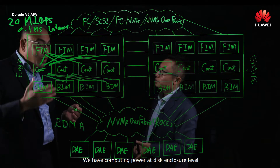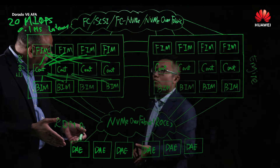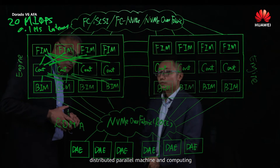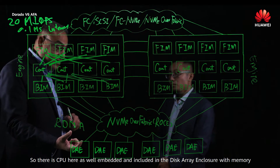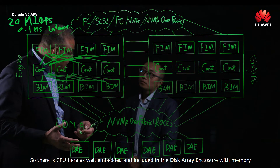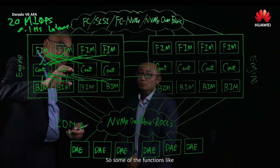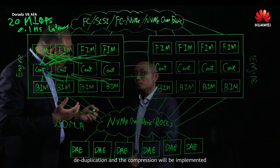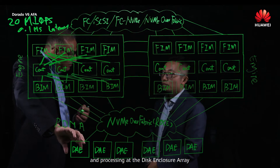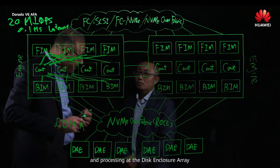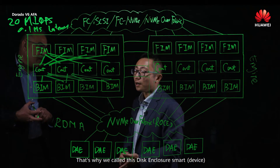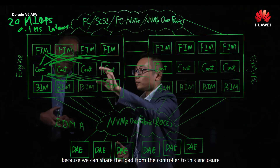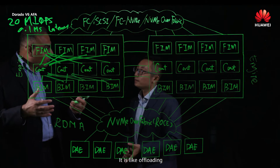We also have computing power at the disk enclosure level — it's a distributed architecture with distributed processing and computing. There is a CPU and memory embedded in the disk array enclosure, so functions like deduplication and compression are implemented and processed at the disk enclosure level. That's why we call this a smart enclosure — it offloads processing from the controllers.